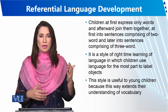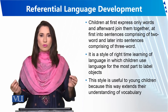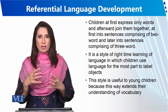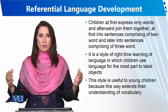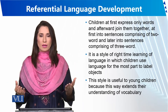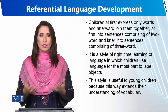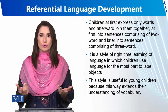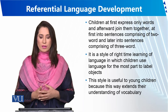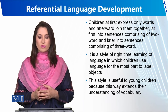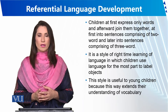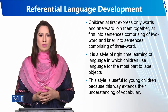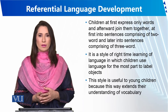In every language, an object has a different name. So if a child is learning two or three languages — one mother tongue, one national language, one second language — they know how that word is expressed in three languages. Basically, children are learning different words for each object and understanding the differences between them. This style is useful to young children because it extends their understanding of vocabulary.